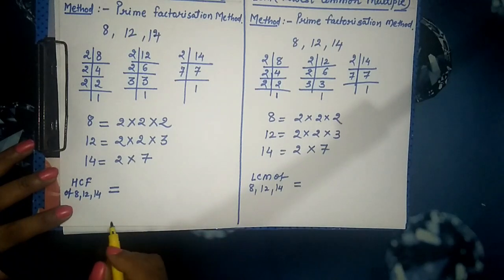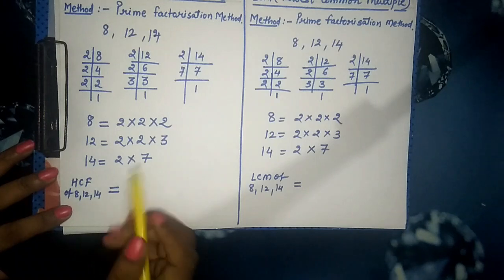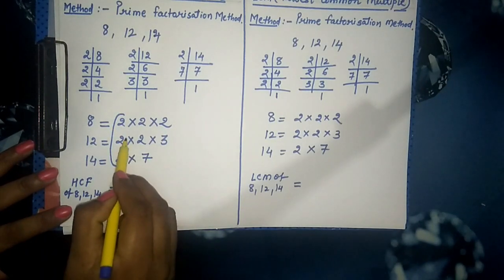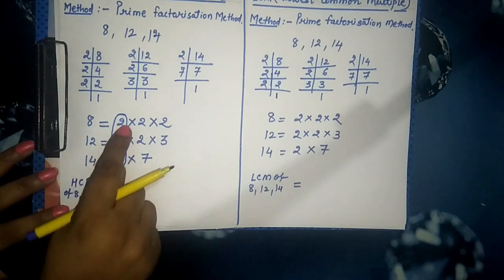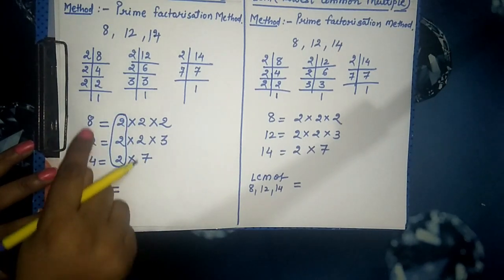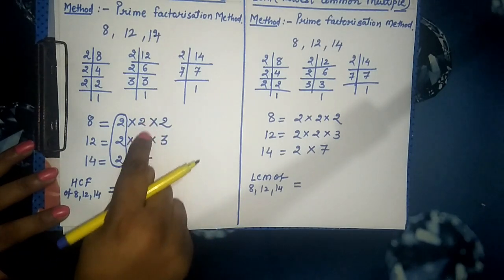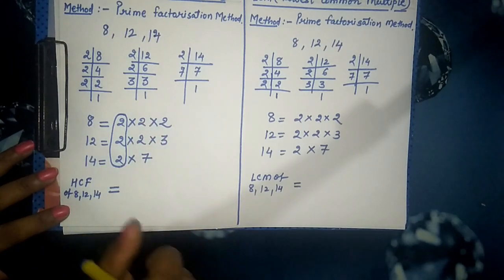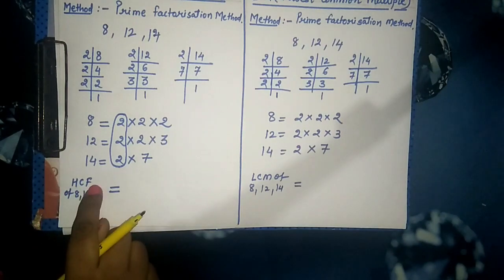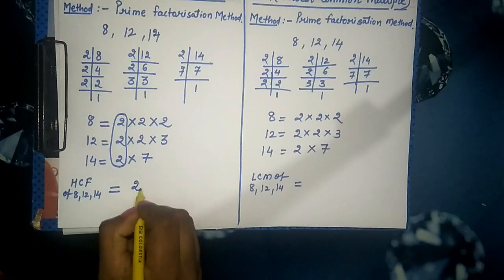In the case of HCF, we check for a common factor present in all three numbers — 8, 12, and 14. If there is no common factor, we consider 1. But here, 2 is clearly the common factor present in all three. We are not interested in factors present in only one or two numbers, so 3 and 7 are not considered. Therefore, the HCF of 8, 12, and 14 is 2.